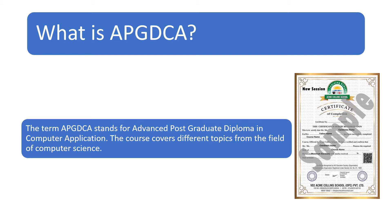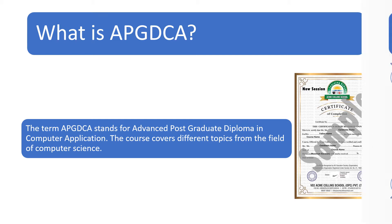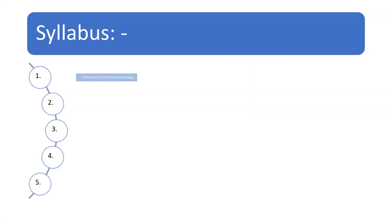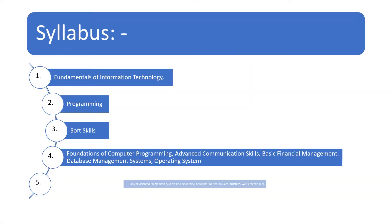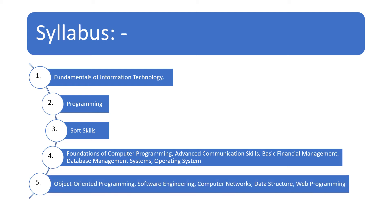Let's talk about its syllabus on the next slide. You are learning five major points in the APGDCA course, which you can go through while reading each point or its sub-points. As you can see in the syllabus, the first topic is Fundamentals of Information Technology, second is Programming, and third is Soft Skills.